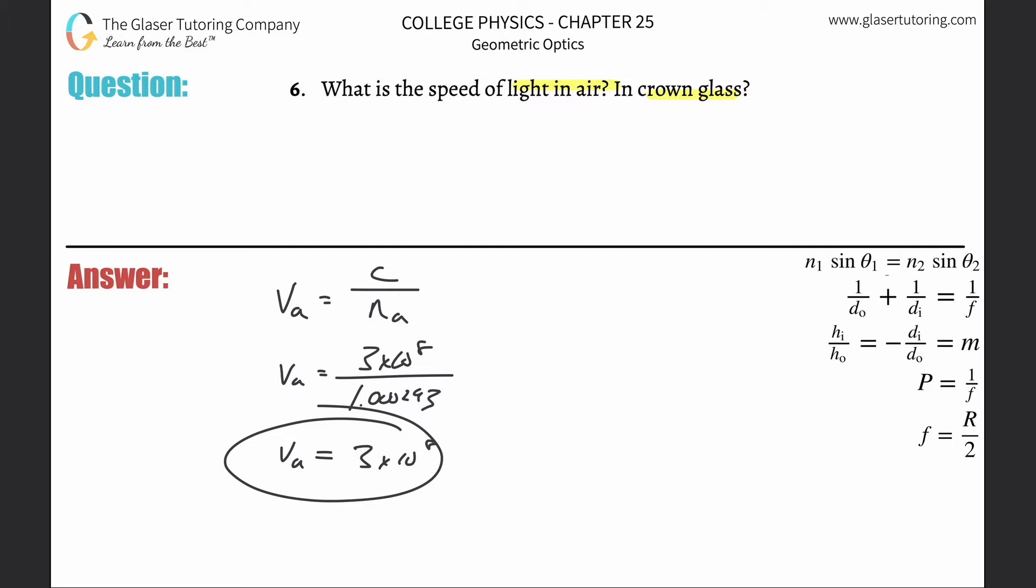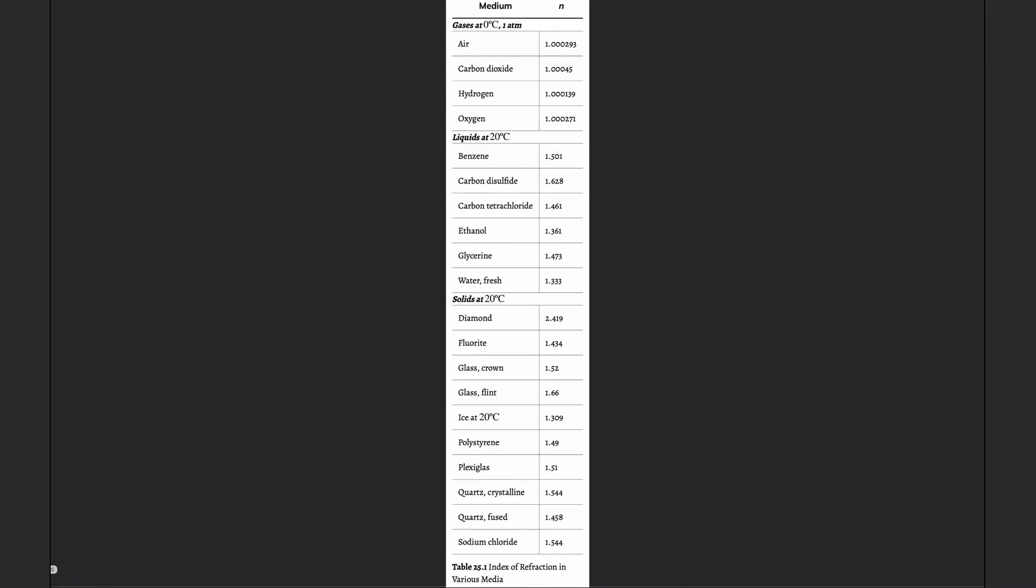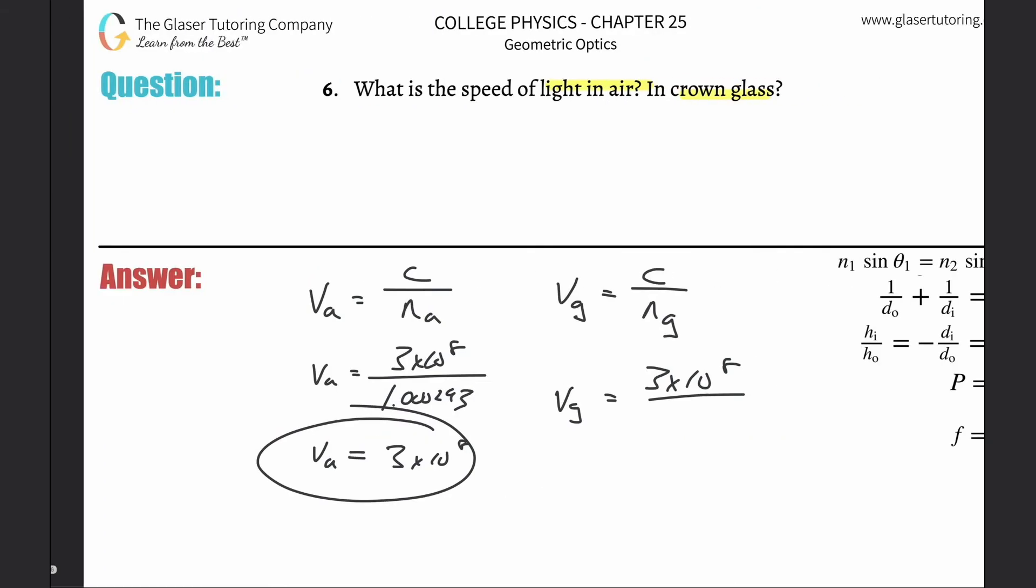Anyway, crown glass. Same thing: speed of light over the index of refraction of crown glass. So there's going to be three times ten to the eight divided by, got to look up crown glass. Where's crown glass? Here it is, glass crown, 1.52. So what you're going to do is go back and plug it in.